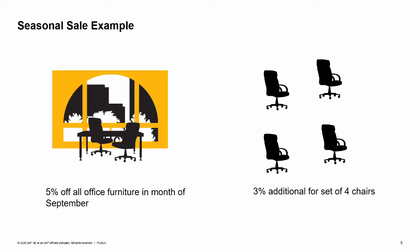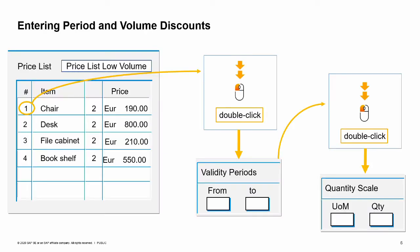You can use period and volume discounts to define special prices for price lists. A special price can apply to a defined period or to a quantity scale. For example, you decide to have an autumn sale on office furniture. You want to give a 5% discount off the price of desks and chairs on the small accounts sales price list for the month of September. During that period you will also give an additional discount of 3% for anyone who buys a set of 4 chairs or more. In SAP Business One, time-based discounts are set up first, then the volume discounts are defined for those validity periods.